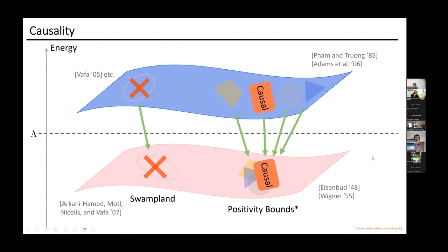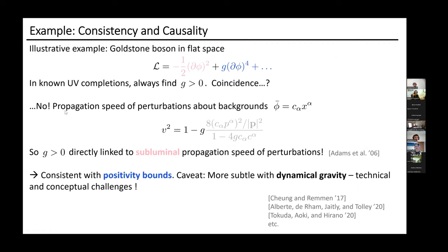We now have a more modern take on this. We know from the swampland and the S-matrix positivity bounds that there are actually non-trivial constraints which are retained once you flow to the IR. One of these is causality, which has been studied since the 50s as an idea in field theory. There are some interesting properties about this. As an IR avatar, what's happening in the relevant region can be seen quite easily. Let's take an example: a Goldstone boson on flat space, whose effective theory has just a kinetic term and the leading-order interaction is a (∂φ)⁴ term.